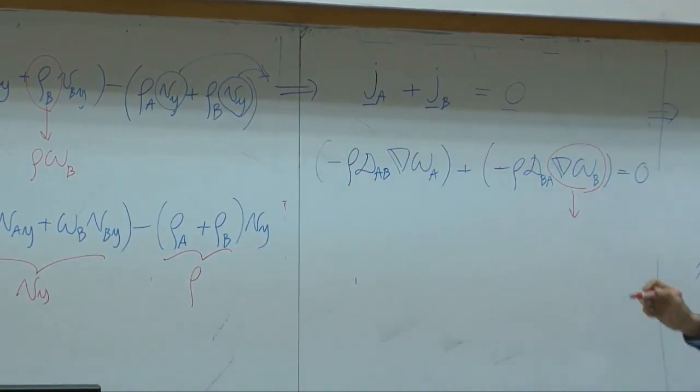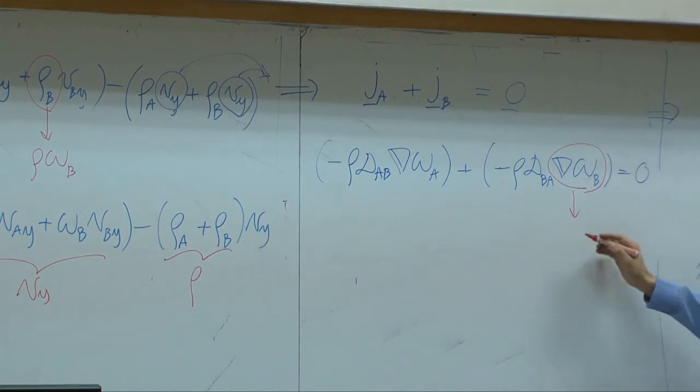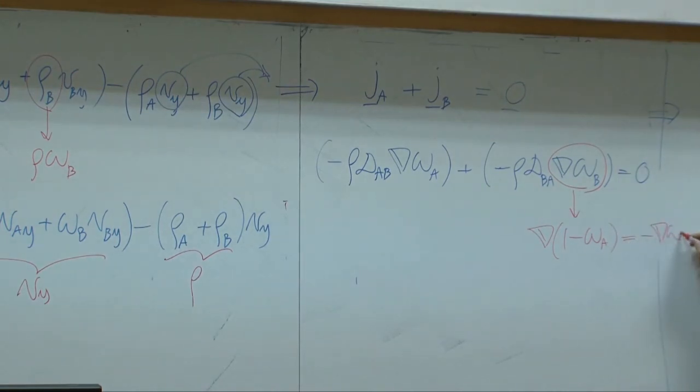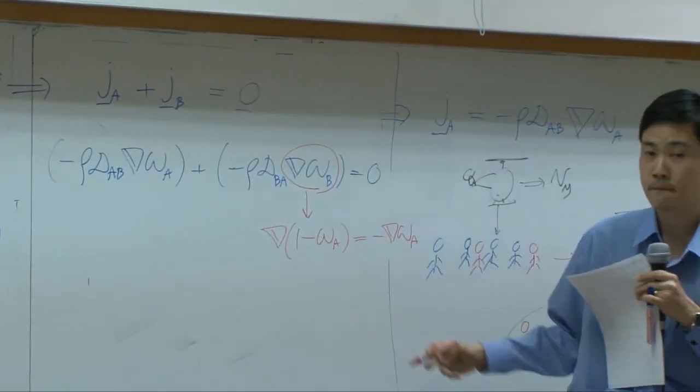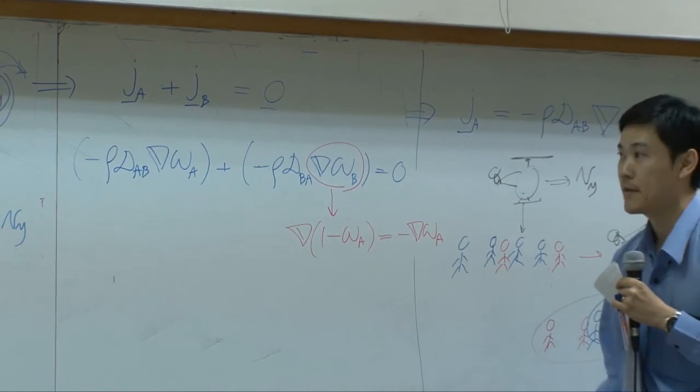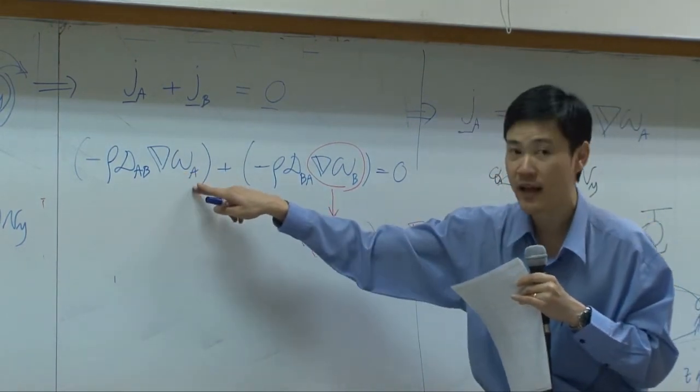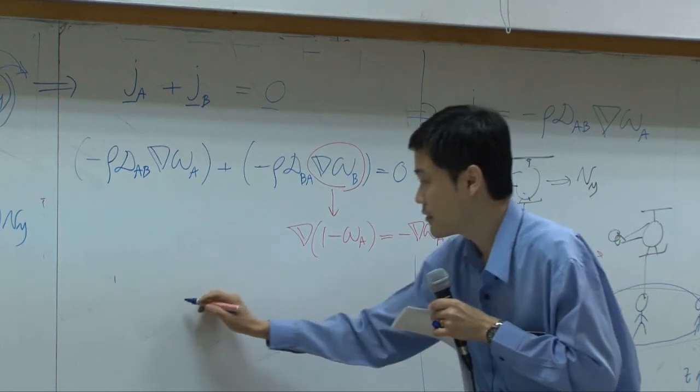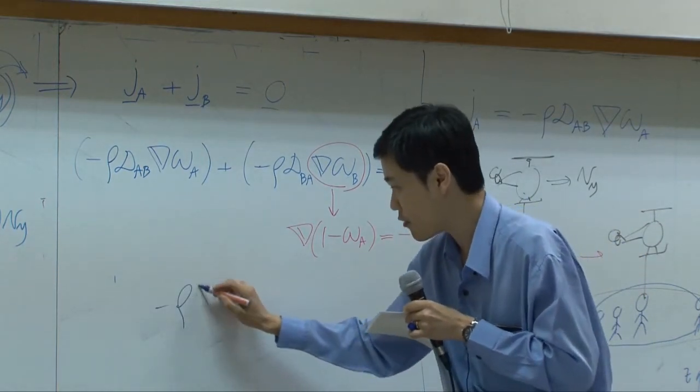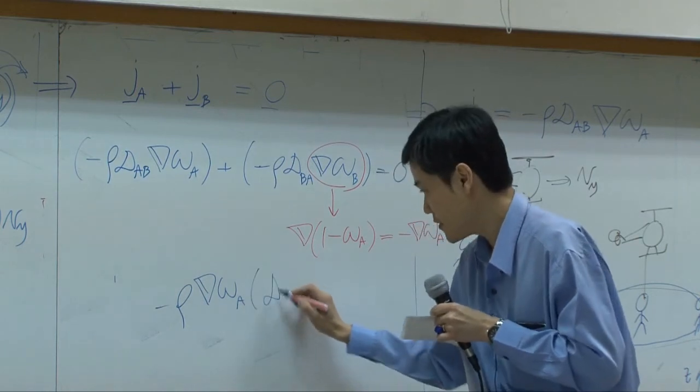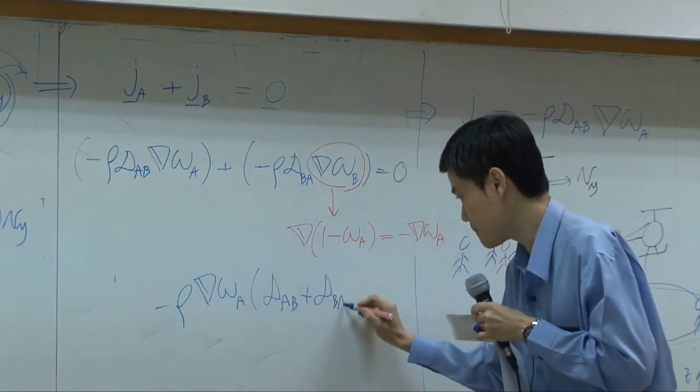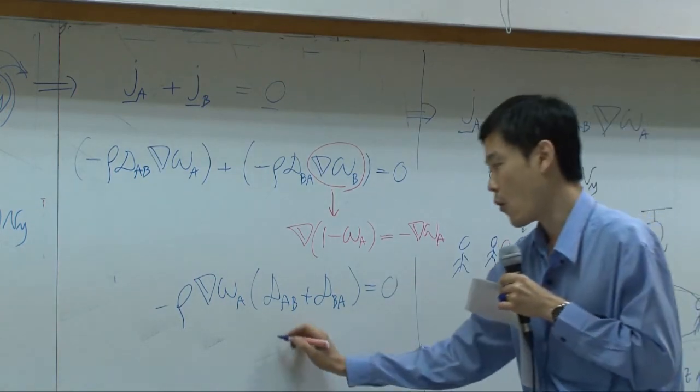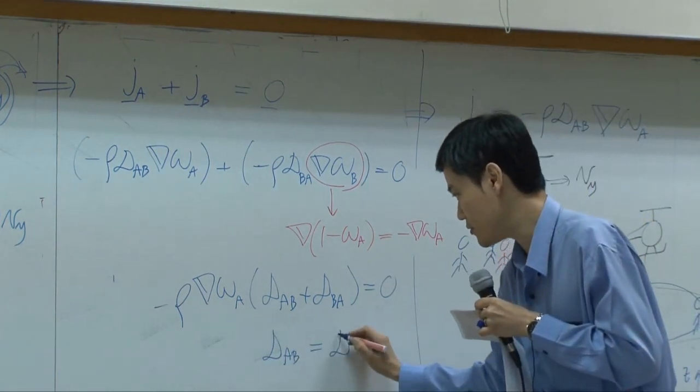Del omega B is differentiated of omega B. It is equal to differentiate of one minus omega A. That's equal to minus del omega A because one here is constant. So you have rho D A B del omega A to be common. As a result, you have minus rho D omega A D A B plus D B A equal to zero. Or D A B is equal to D B A.